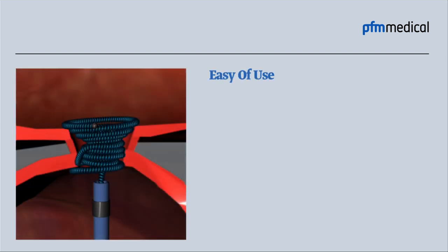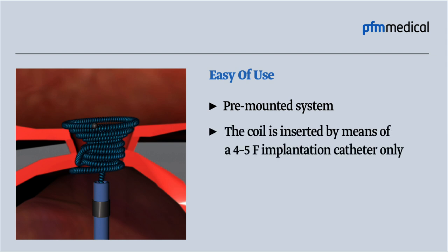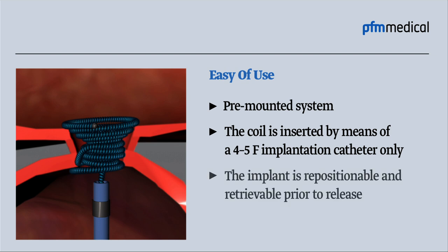Ease of use. The coil is inserted by means of a 4-5F implantation catheter only, using a pre-mounted system. The implant is repositionable and retrievable prior to release.